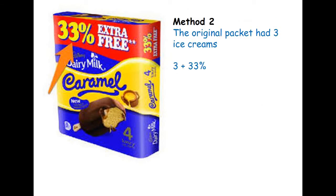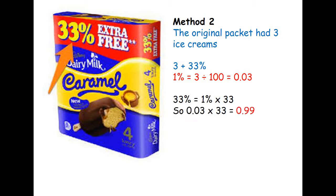Using the second method, we can find 1% by dividing by 100. So 3 divided by 100 is 0.03 — that's 1%. We want 33 lots of 1% to get 33%, so we do 0.03 multiplied by 33, which gives us 0.99. We round that up to 1, giving us an extra ice lolly — four ice lollies in the box.